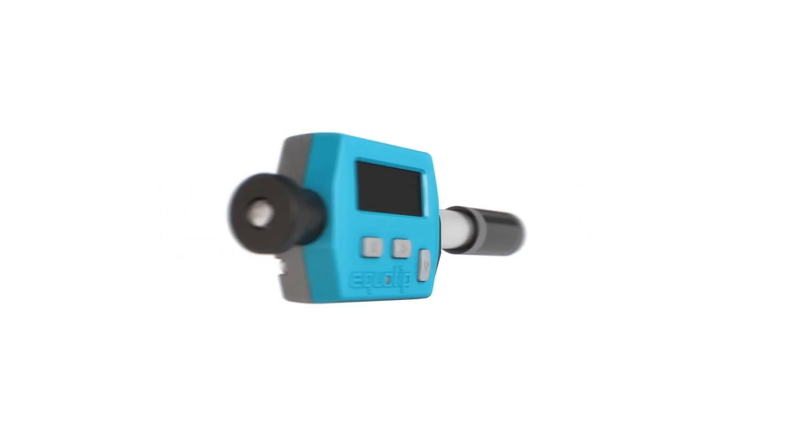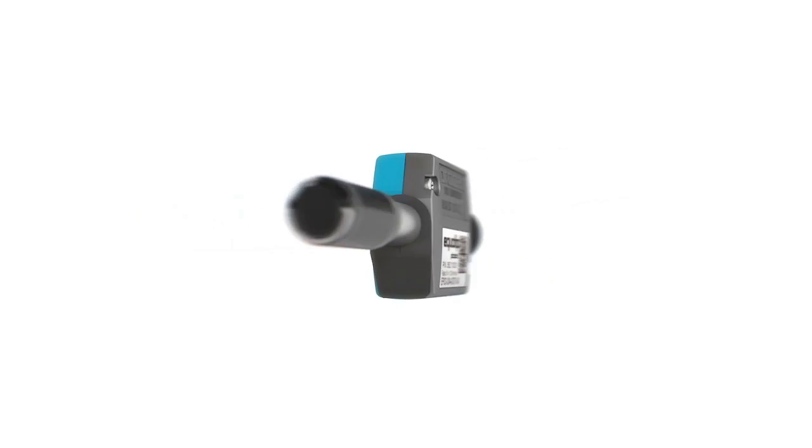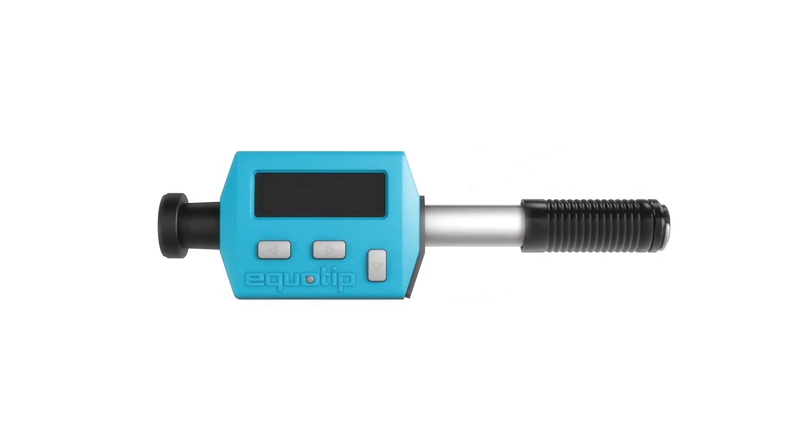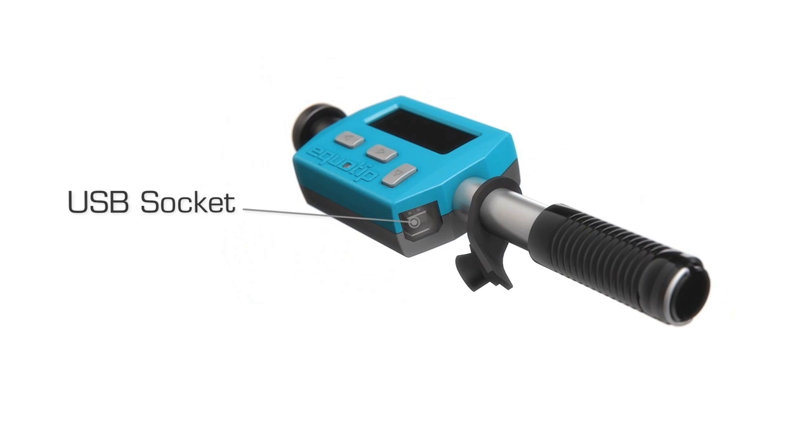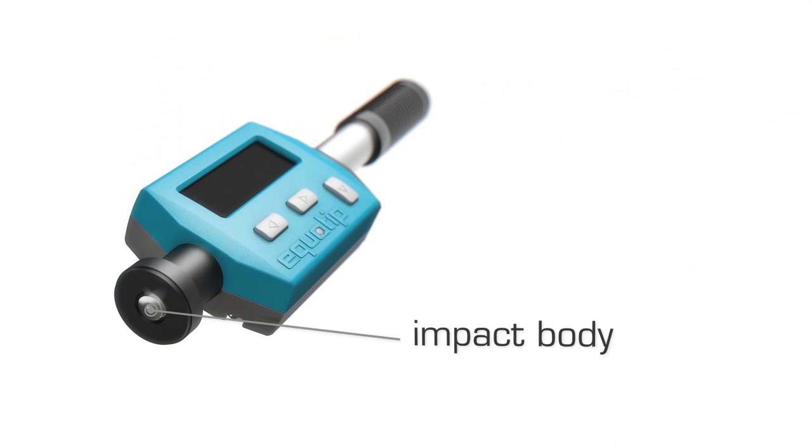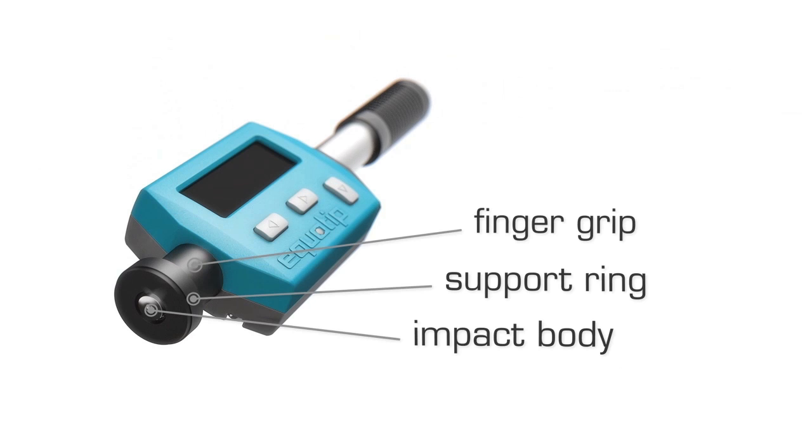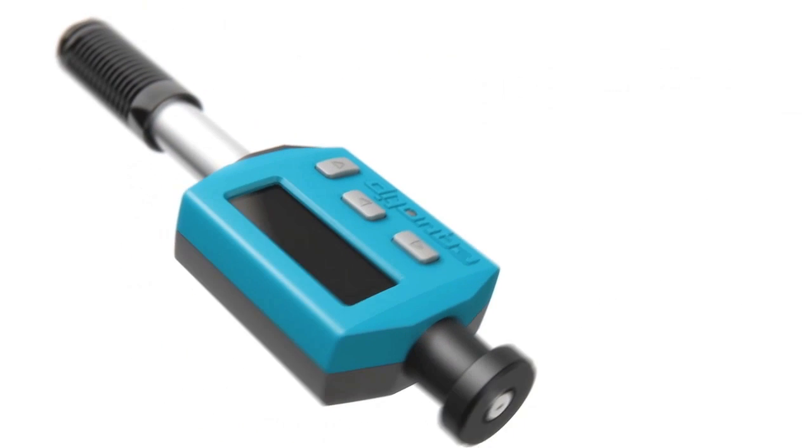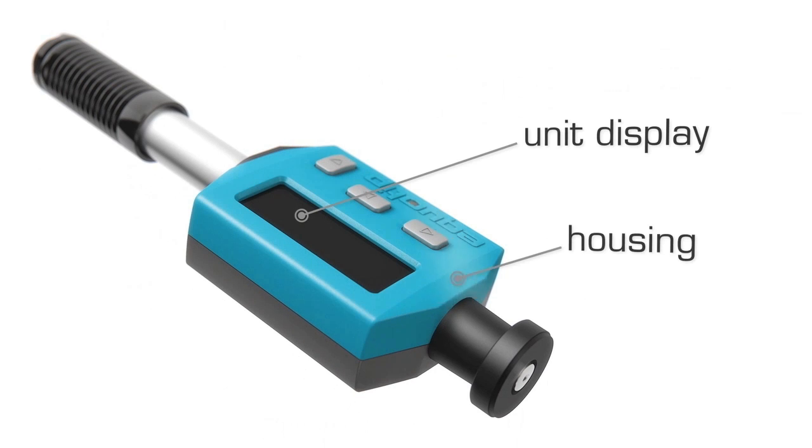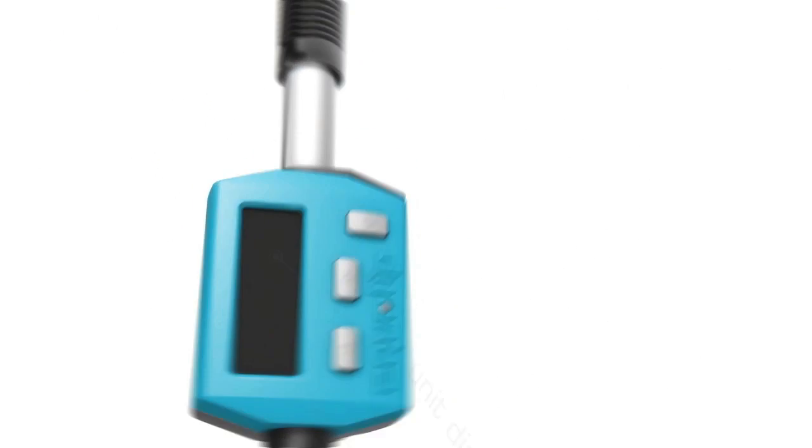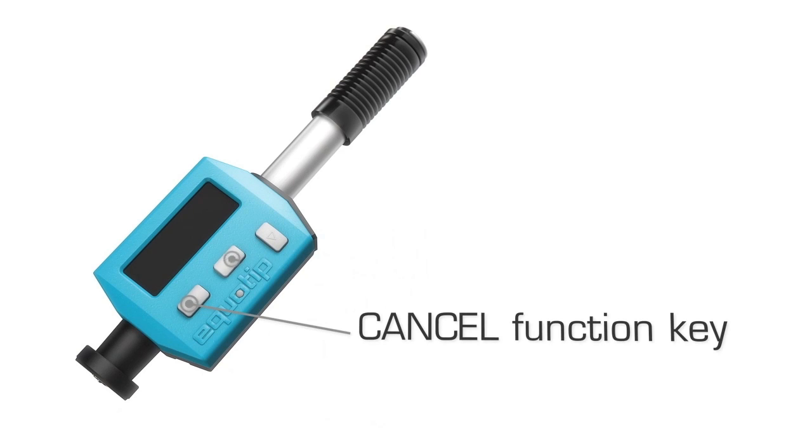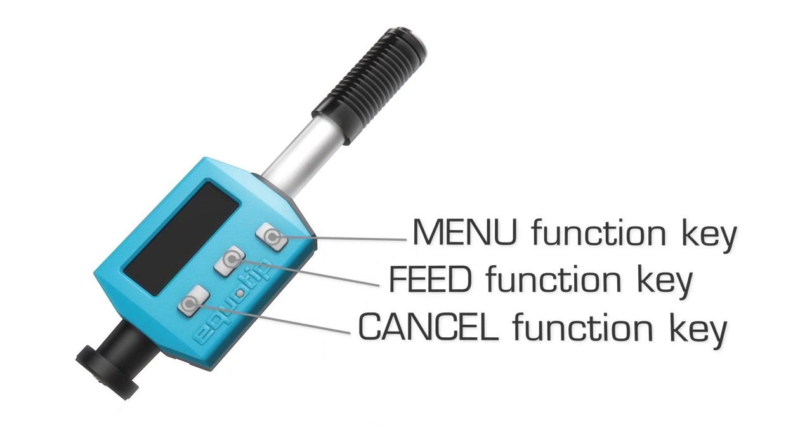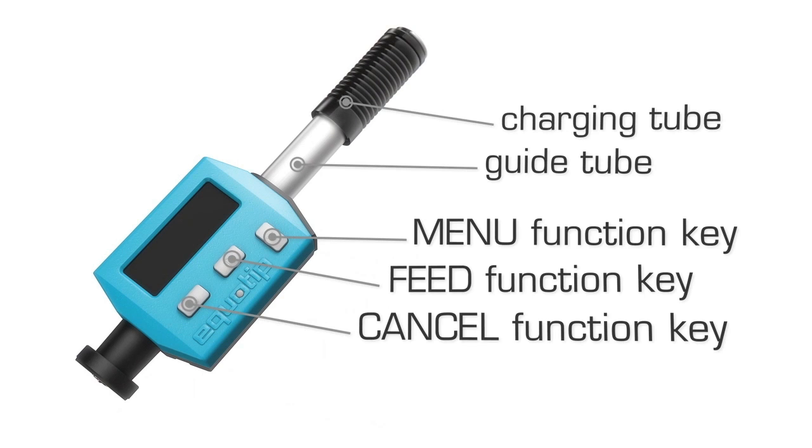These are the different parts and functions of the instrument. The USB socket, the USB cover, the impact body, the support ring, the finger grip, the unit display, the housing, cancel function key, feed function key, menu function key, guide tube and charging tube.